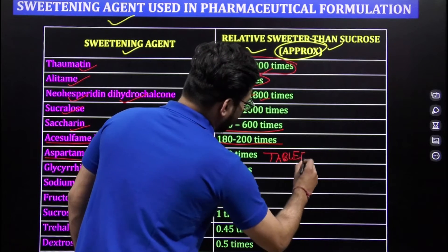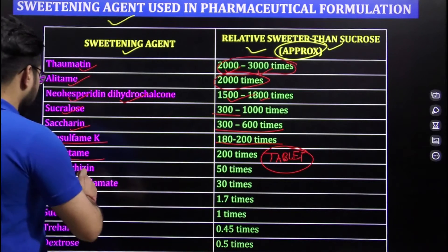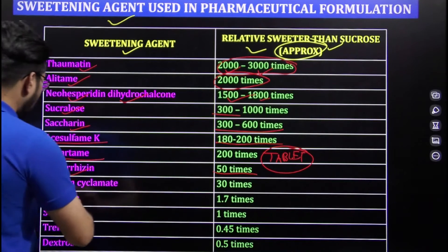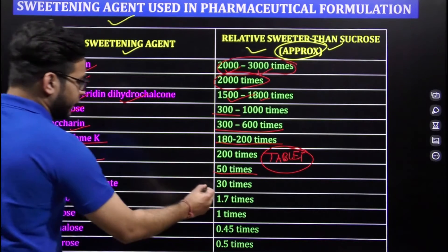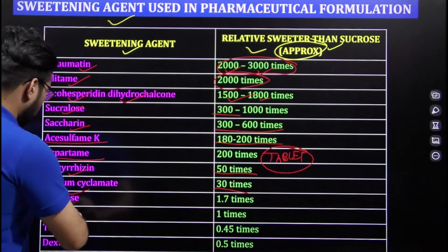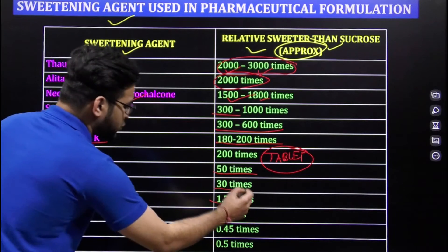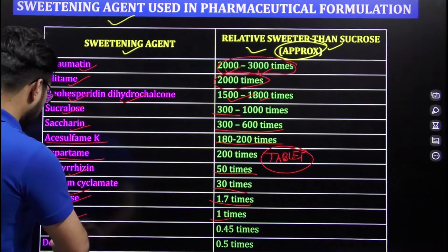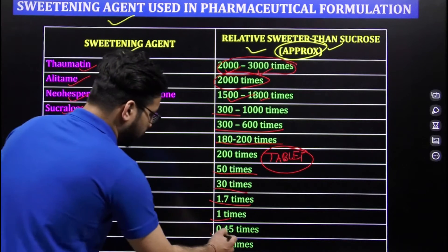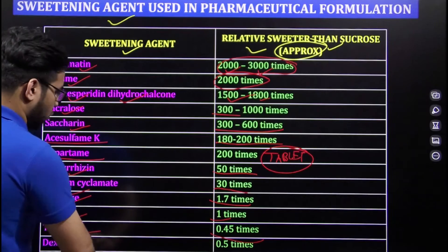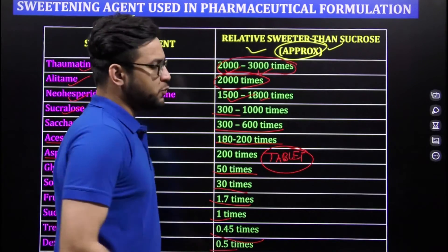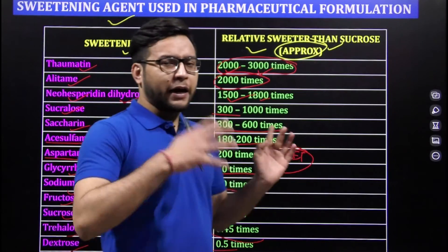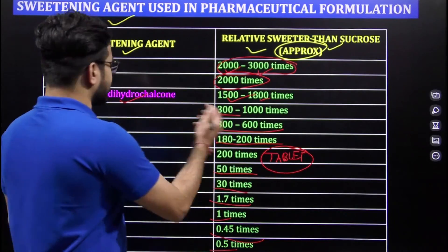Remember, aspartame is asked in the tablet case. Glycine is 50 times sweeter, sodium cyclamate is 30 times sweeter, and fructose is 1.7 times sweeter than sucrose. Sucrose itself is 1 time, trehalose is 0.45 times, and dextrose is 0.5 times sweeter than sucrose.